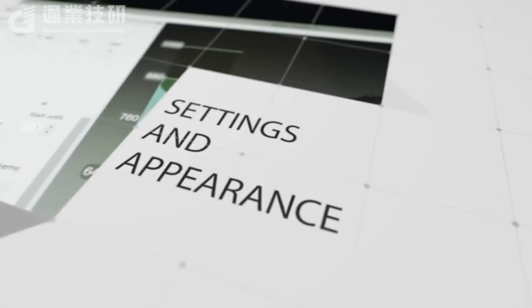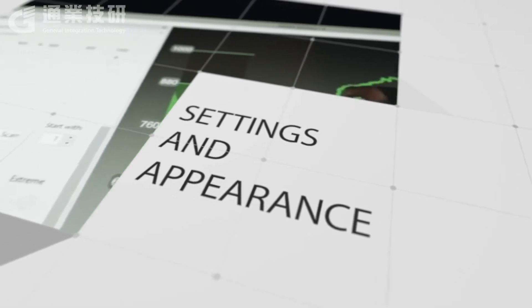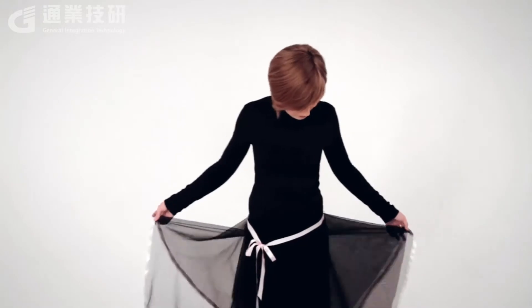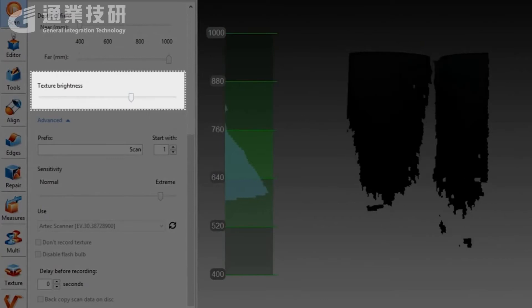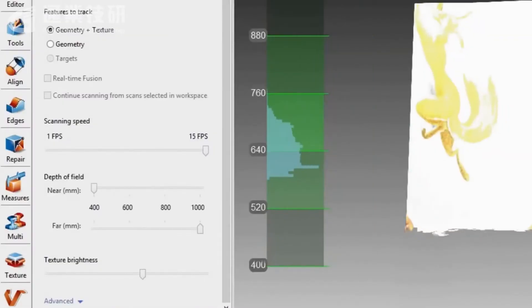Although it is possible to scan virtually anything, clothing and accessories can affect the quality of the scan. If the person is wearing dark or black clothes, consider increasing the texture brightness to make scanning easier. The opposite is true if the person is wearing white.